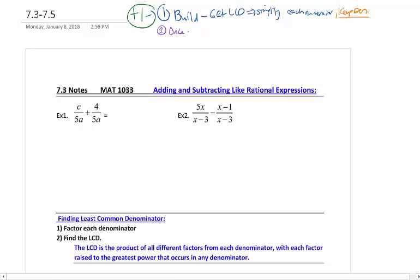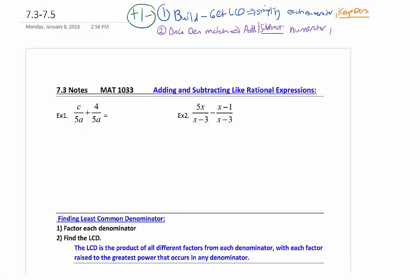So for step two, once the denominators match, then you can go to step two. You're going to add or subtract, and be careful with the subtracting, the numerators. And again, you're going to keep the denominator. And that's going to be equal to your LCD. So we're leaving our denominator alone once we've built them to match.